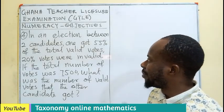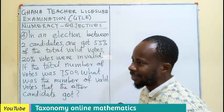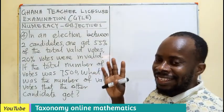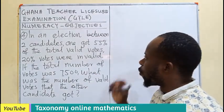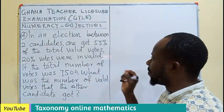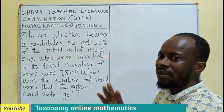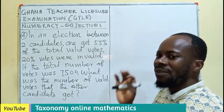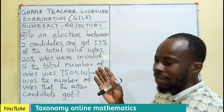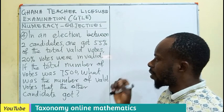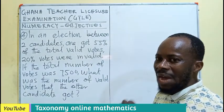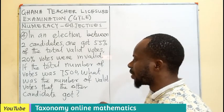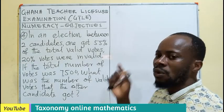In an election between two candidates — we can take that to be John Mahama and Nana Akufo-Addo — one got 55% of the valid votes. 20% of votes were invalid, meaning they are not counted. If the total number of votes was 7,500, what was the number of valid votes that the other candidate got?